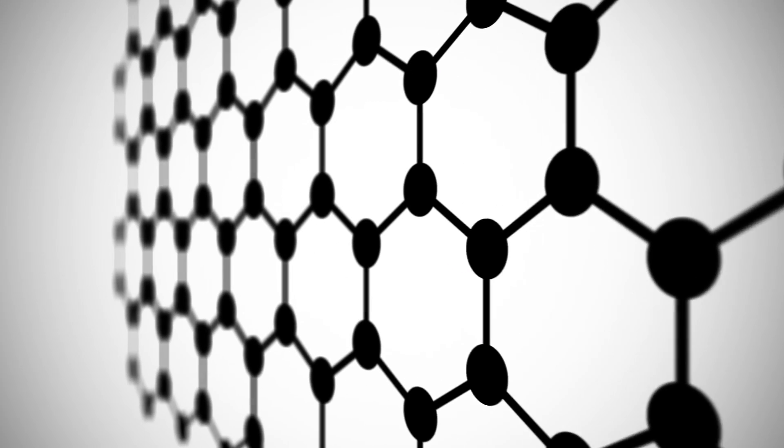It's made up of little hexagons of carbon all joined together to make a sheet. Graphene is a Nobel Prize winning material.